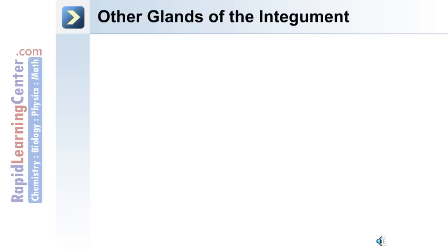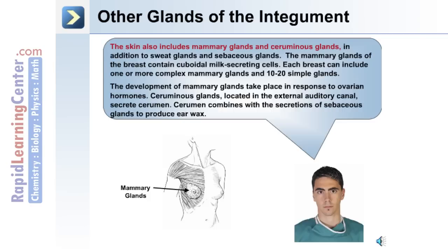There are other types of glands in the skin, including mammary glands in breast tissue and ceruminous glands. The mammary gland of the breast contains cuboidal milk-secreting cells. In each breast, there can be one or more complex mammary glands and 10 to 20 simple glands. The development of mammary glands takes place in response to ovarian hormones. Ceruminous glands are located in the external auditory canal, and they secrete cerumen. Cerumen combines with the secretions of sebaceous glands to produce earwax.